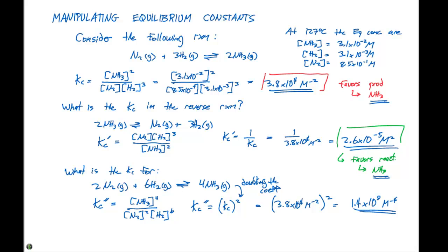Lastly, we can manipulate the equations however we would like. So what is Kc for this reaction: We have NH3 gas in equilibrium with 1½ N2 gas plus 3½ H2 gas. And we're going to call this Kc triple prime to indicate that it's different from the rest of these.